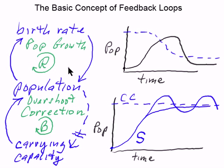It had deep within the model a population growth loop and an overshoot correction loop, which had a delay and an inverse relationship, which is what made it a balancing loop. Now, let's summarize the basic concept of feedback loops.